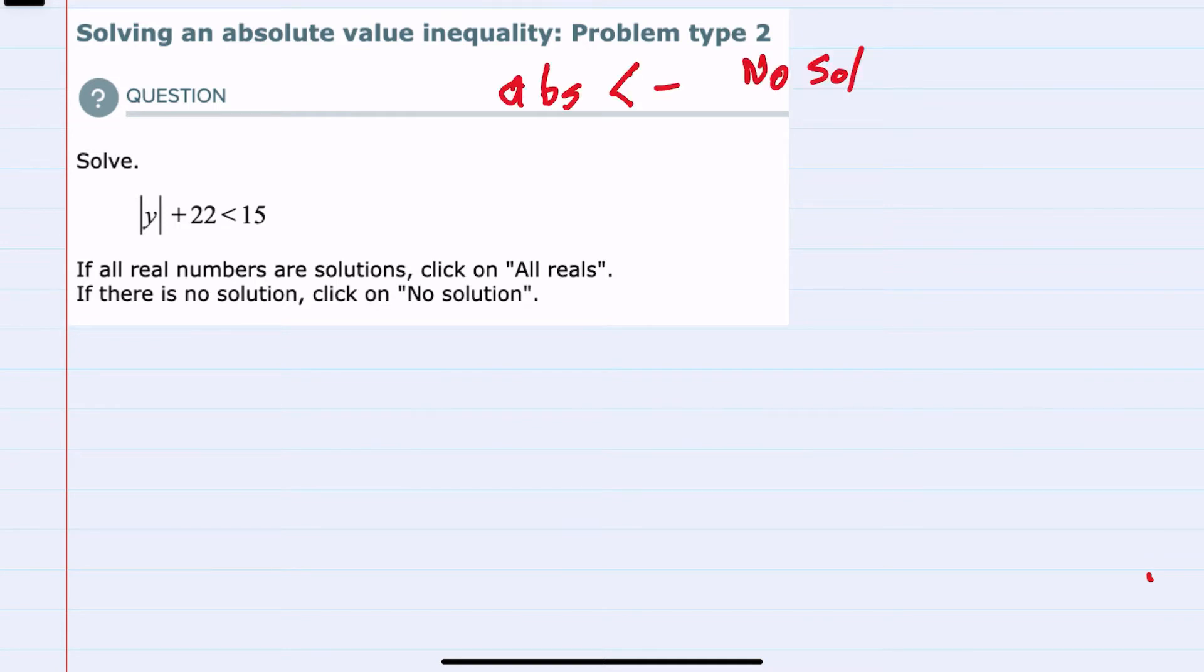When we start solving, once we have the absolute value by itself, if that absolute value is less than a negative, that would mean that the absolute value is negative. In order to be less than a negative, that's no solution, because the absolute value is always positive.